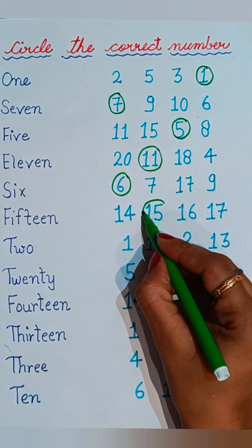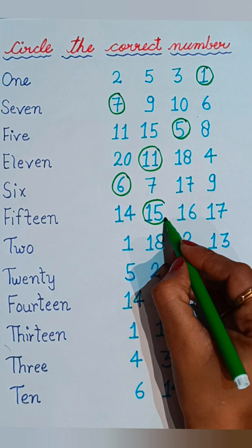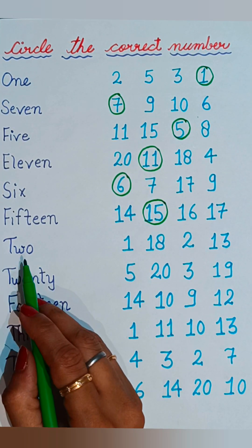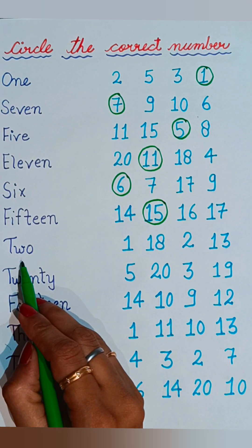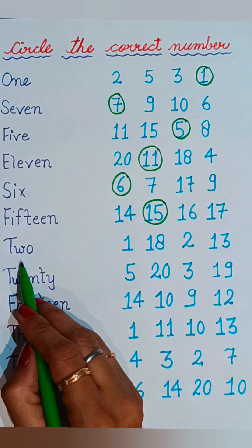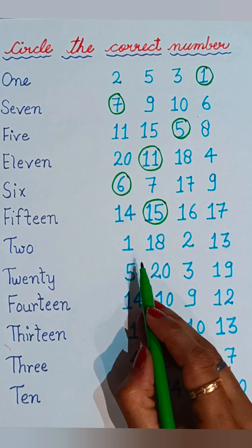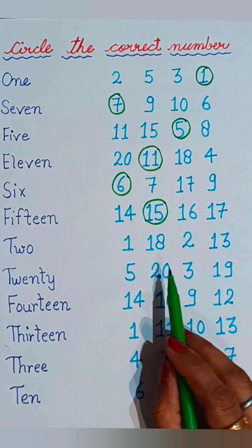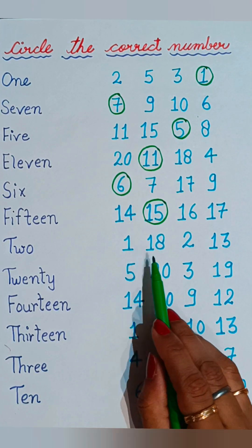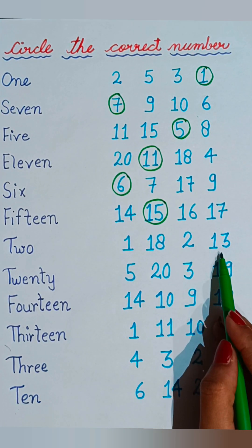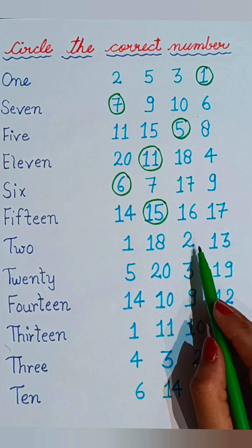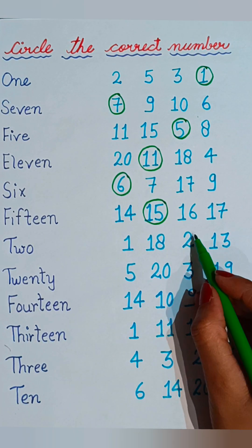Now see the next one: T-W-O, two. Where is two given? Let's see: one, eighteen, two, and thirteen — four numbers are given, so we have to circle the correct number two.